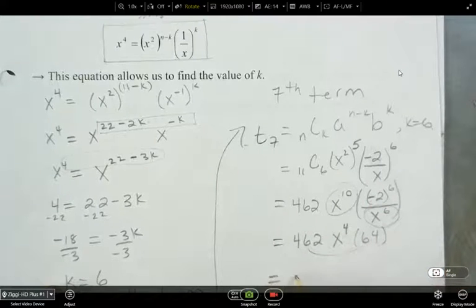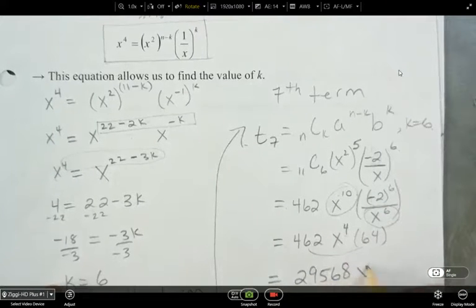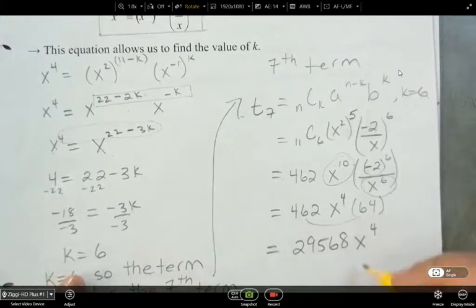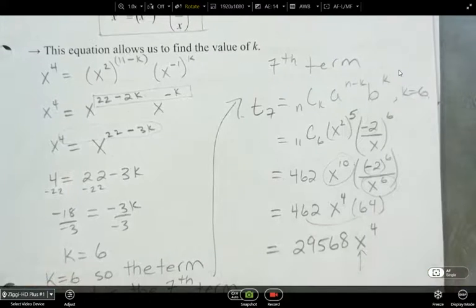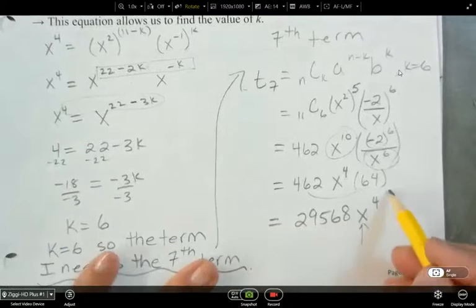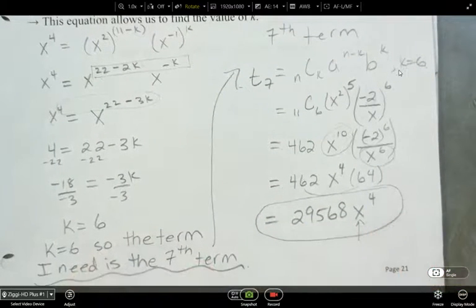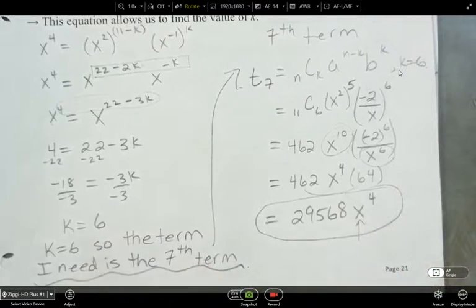So then multiply these two together, and we end up with 29,568 x to the power of 4. All right. So since we have that, we know that we've got the correct term, right? So this is our term that has x to the power of 4.